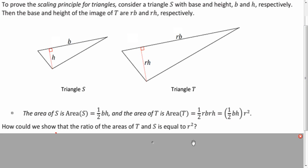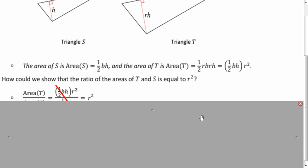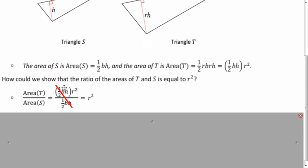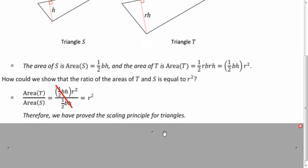Now what do we have to do to show that the ratio is R squared? We just divide them. We have the same expression here in the numerator and denominator, and it can't be zero, right? It's an area of a triangle. So we can divide them out, and we end up with R squared. So we prove this for triangles.